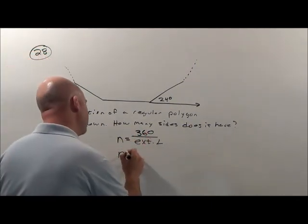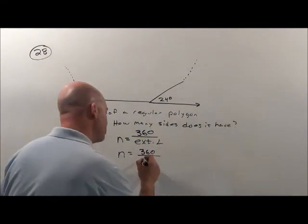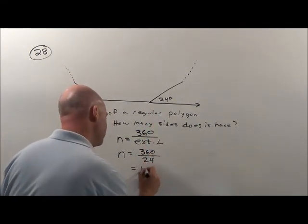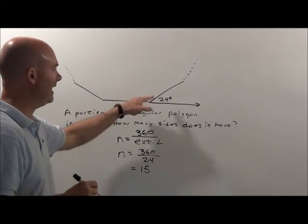So here, number of sides, 360 divided by 24. Boom! 15 sides is what we're going to have here.